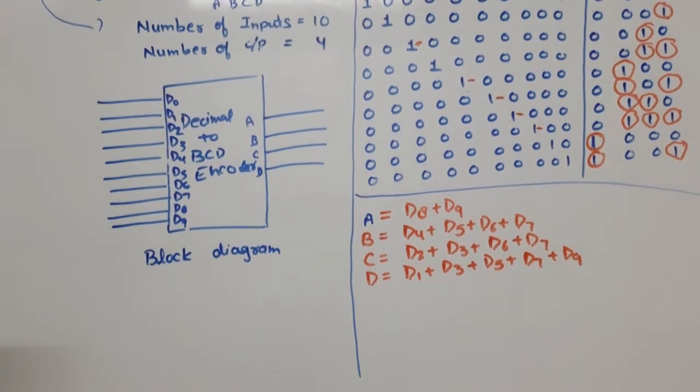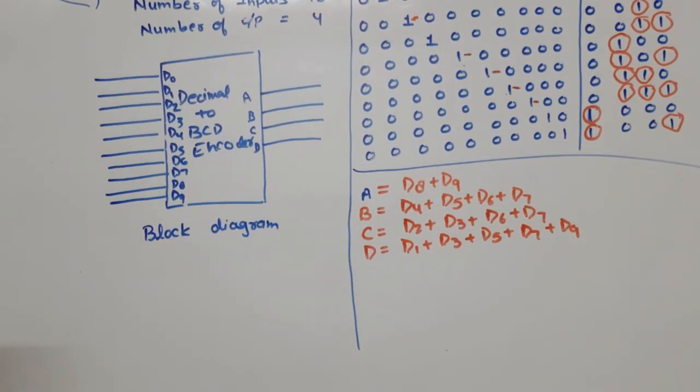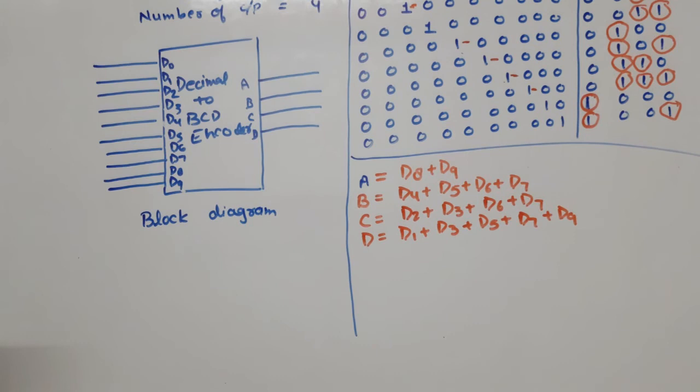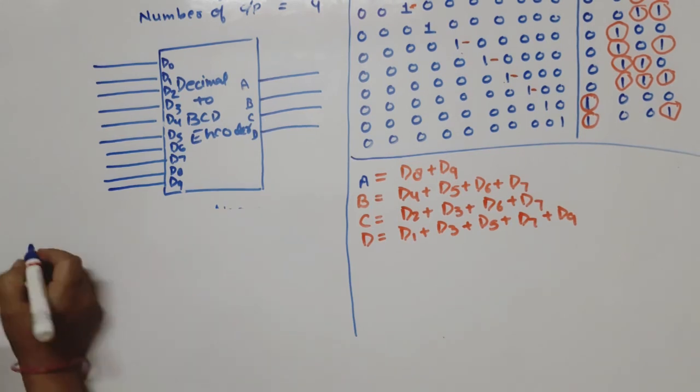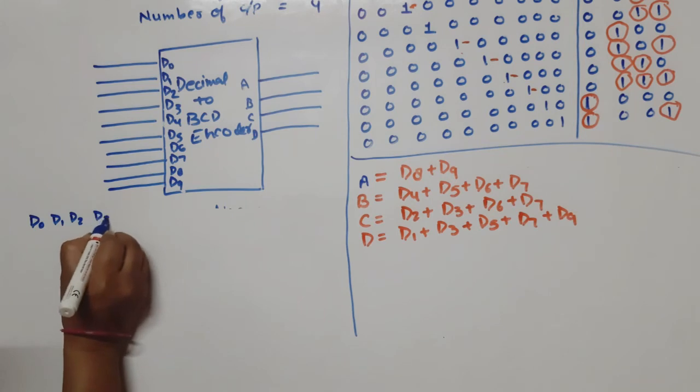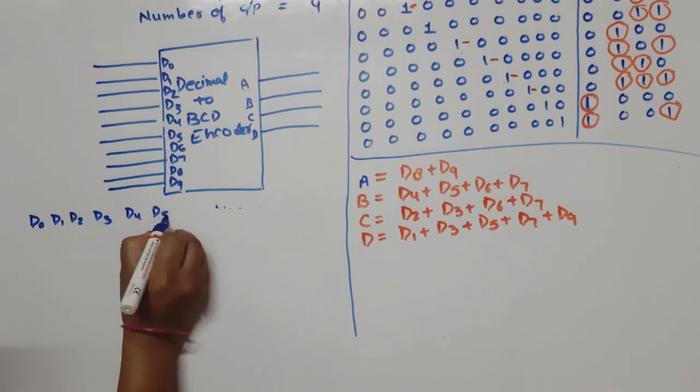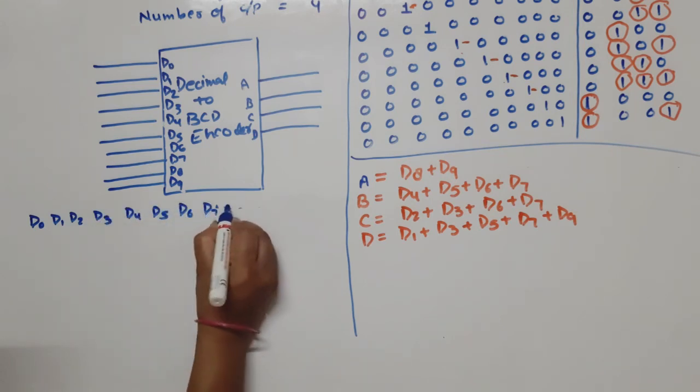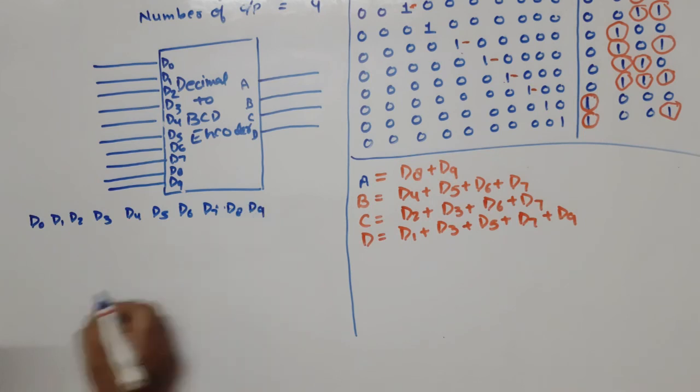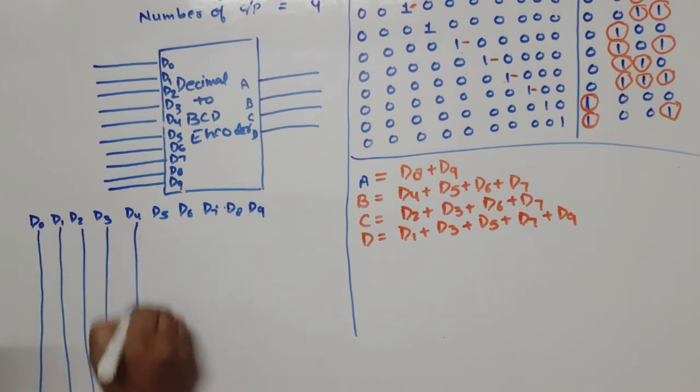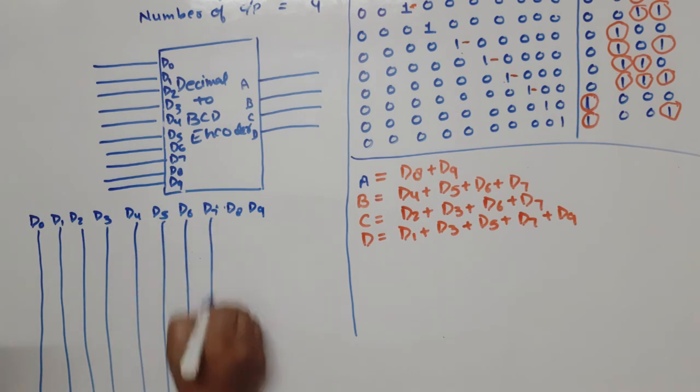Now we draw the logic diagram. How many input lines? I draw here: D0, D1, D2, D3, D4, D5, D6, D7, D8, D9. These are input lines, done.